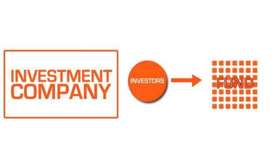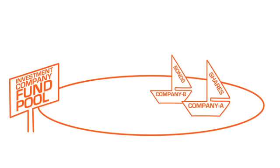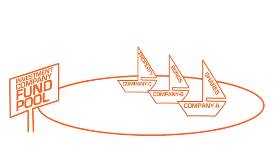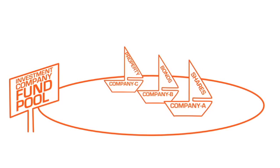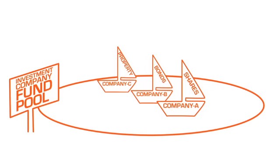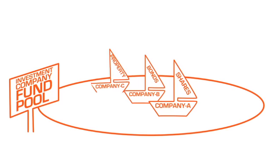There are some key words in these two names, so let's look at them each in turn and see what they tell us about how these funds work. Let's start with 'investment company'. The fund management company running the fund pools its investors' money together and invests it in assets such as shares, bonds and property, with the aim of increasing investors' money in the long term. By spreading investors' money across a lot of different investments, a fund also reduces the risk of any one of those investments going wrong.